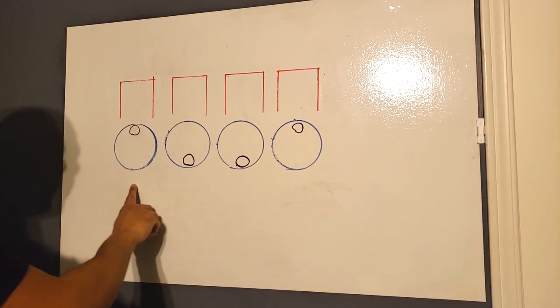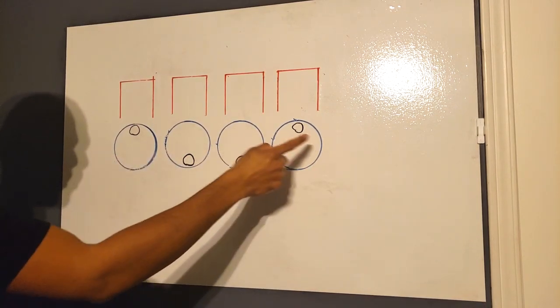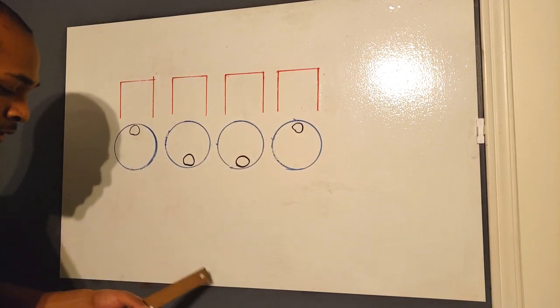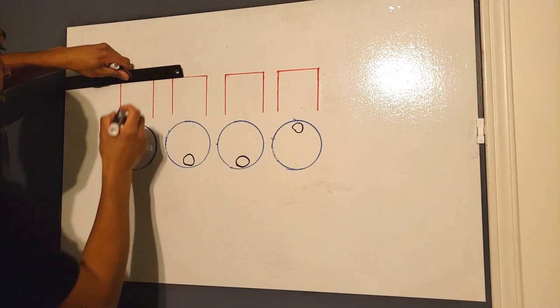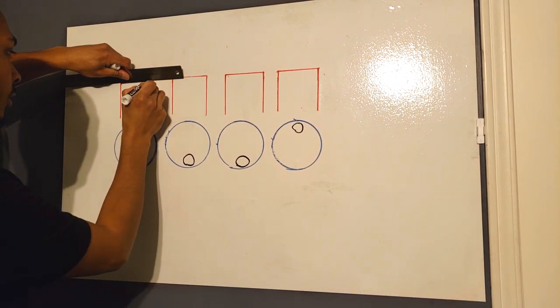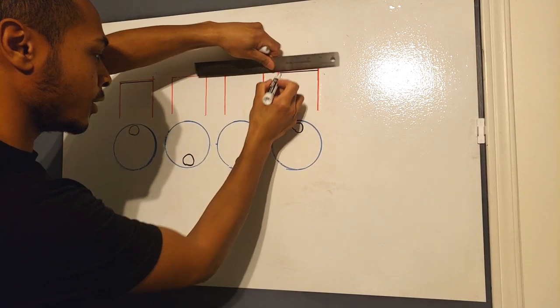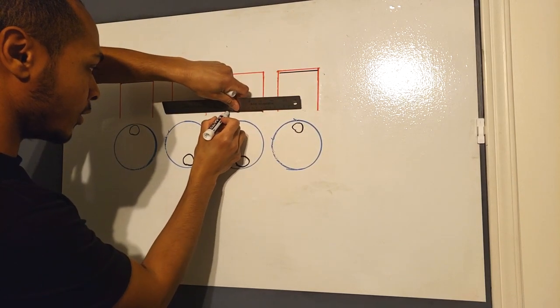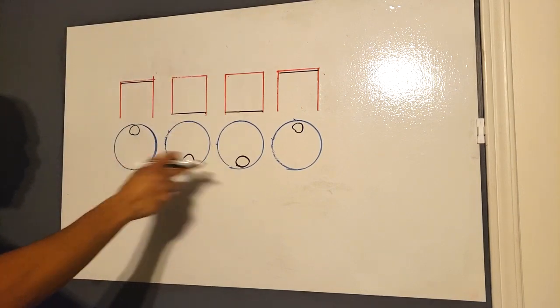So here is a typical four cylinder. This is how the crank is laid out. So two up, two down. Zero degrees, 180, 180. So simply our pistons are here. TDC and then TDC, BDC, BDC, BDC. So very simple.